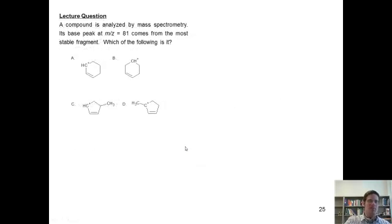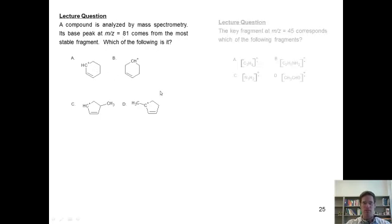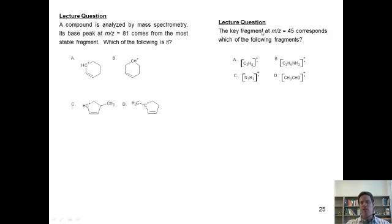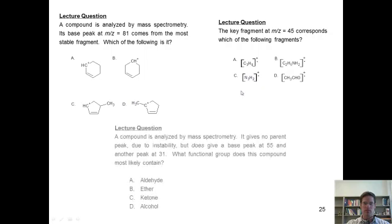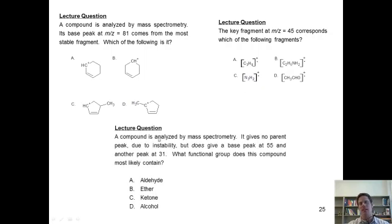A compound is analyzed by mass spectrometry — its base peak at m/z equals 81 comes from the most stable fragment. Which of the following is that fragment? Next: the key fragment m/z equals 45 corresponds to which of the following fragments? And last: a compound is analyzed by mass spec, gives no parent peak due to instability, but does give a base peak at 55 and another at 31. What functional group does this compound most likely contain?